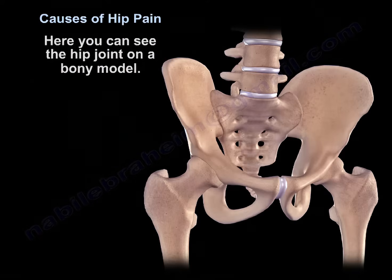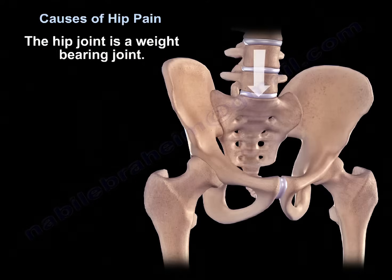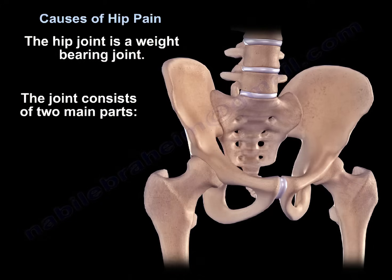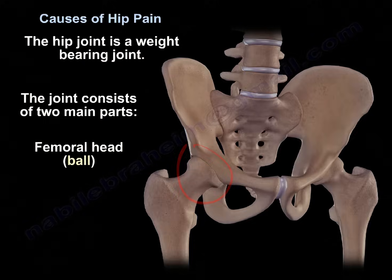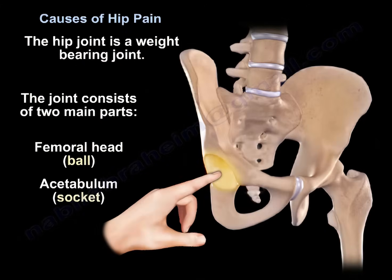Here you can see the hip joint on a bony model. The hip joint is a weight-bearing joint. The joint consists of two main parts: the femoral head, which is a ball, and a socket. The socket is called the acetabulum.